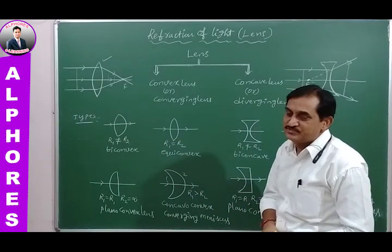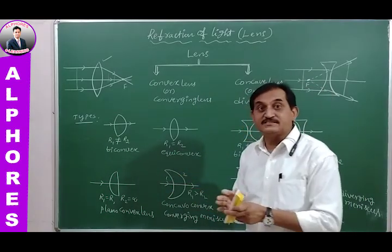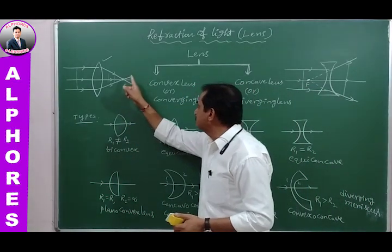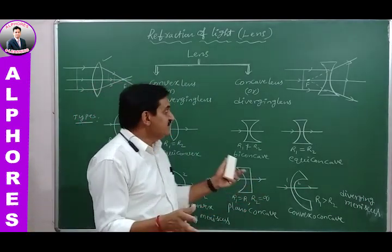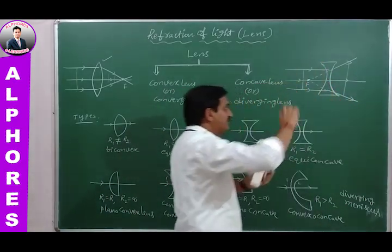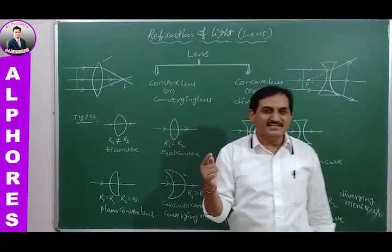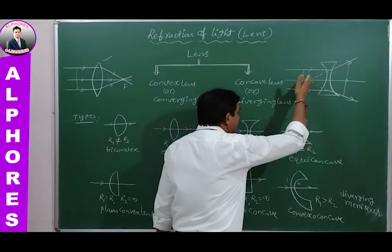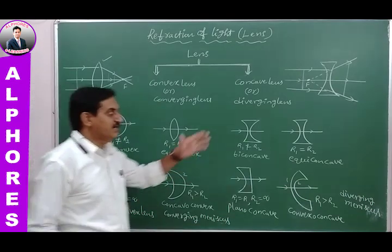A convex lens converges and collects the light rays. A diverging lens diverges and separates the light rays from their original path. The convex lens gives a real image, while the concave diverging lens gives a virtual image, because the diverging rays when extended back intercept to give a virtual image.